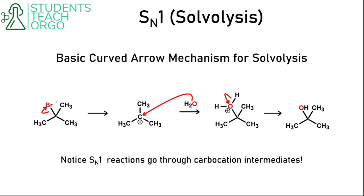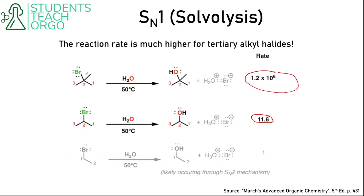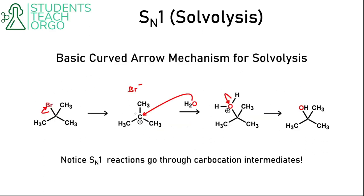This would be a classic SN1 reaction. You can see the first step is that the bromine just leaves, taking these electrons with it. That gives us Br minus floating around in solution and leaves this carbocation right here. It's really important to note this carbocation intermediate because it explains why tertiary is faster. This tertiary carbocation is much more stable than a secondary or a primary carbocation. So that would explain why tertiary goes faster. Then you can see the solvent water attacks, we lose a proton, and that gives us this SN1 product.